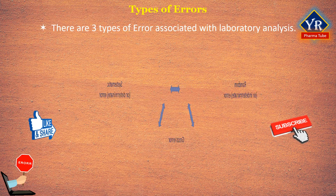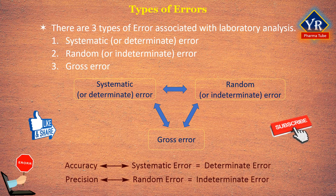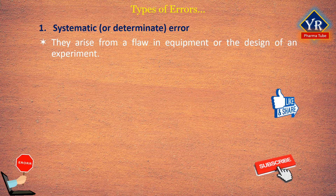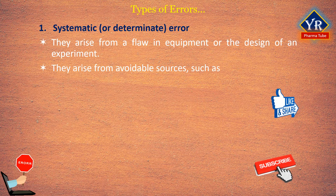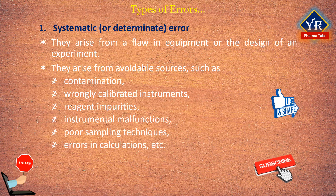There are three types of errors associated with laboratory analysis: systematic or determinate error, random or indeterminate error, and gross error. Systematic error, also called determinate error, arises from a flaw in equipment or the design of an experiment. They are errors known to have occurred in the course of laboratory work. They may arise from avoidable sources such as contamination, wrongly calibrated instruments, reagent impurities, instrumental malfunctions, poor sampling techniques, or errors in calibrations. Results in which avoidable determinate errors are known to have occurred must be rejected, or if a calculation error, recalculated.